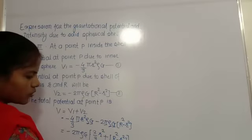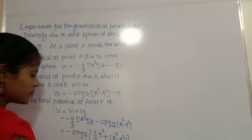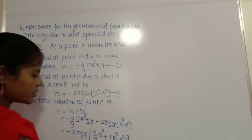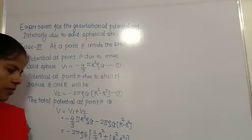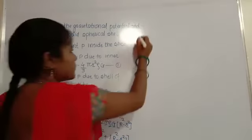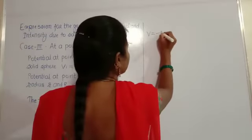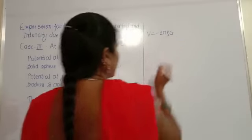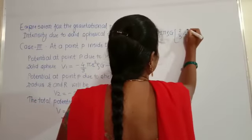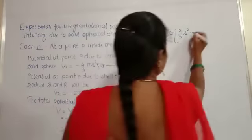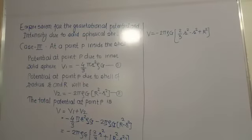Removing the bracket we get: V = −2πρG × [(2/3)r² + R² − r²]. The r² terms are on each side, so collecting them: V = −2πρG × [(2/3)r² − r² + R²].